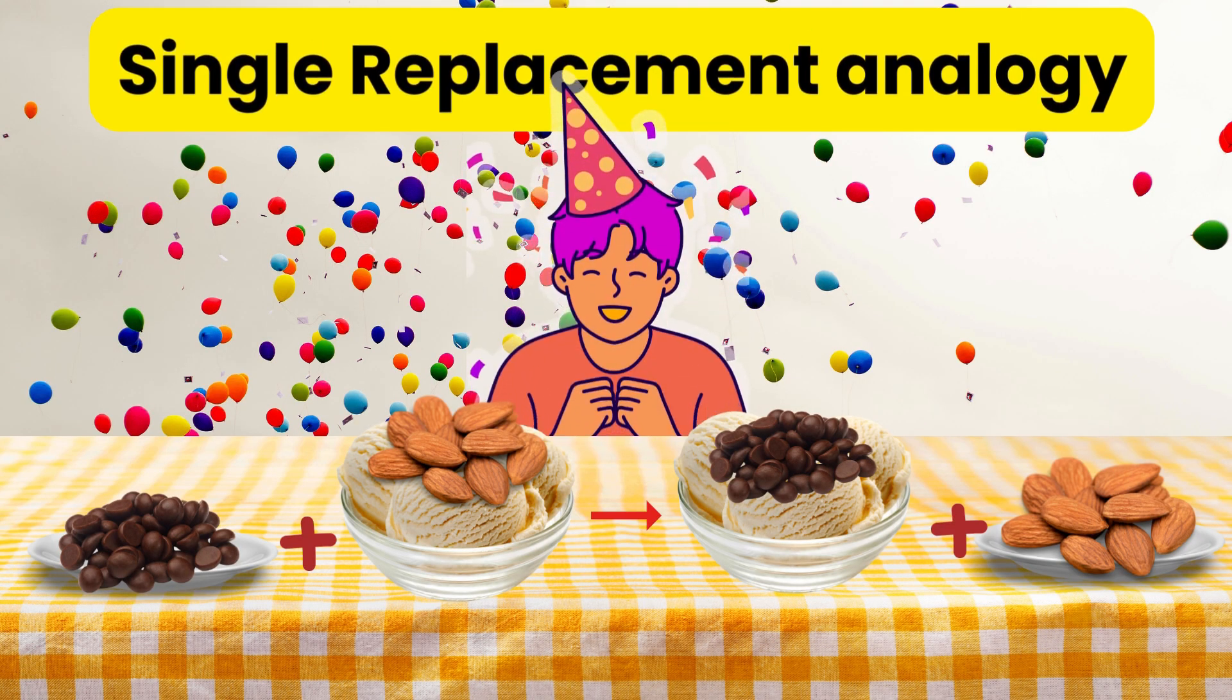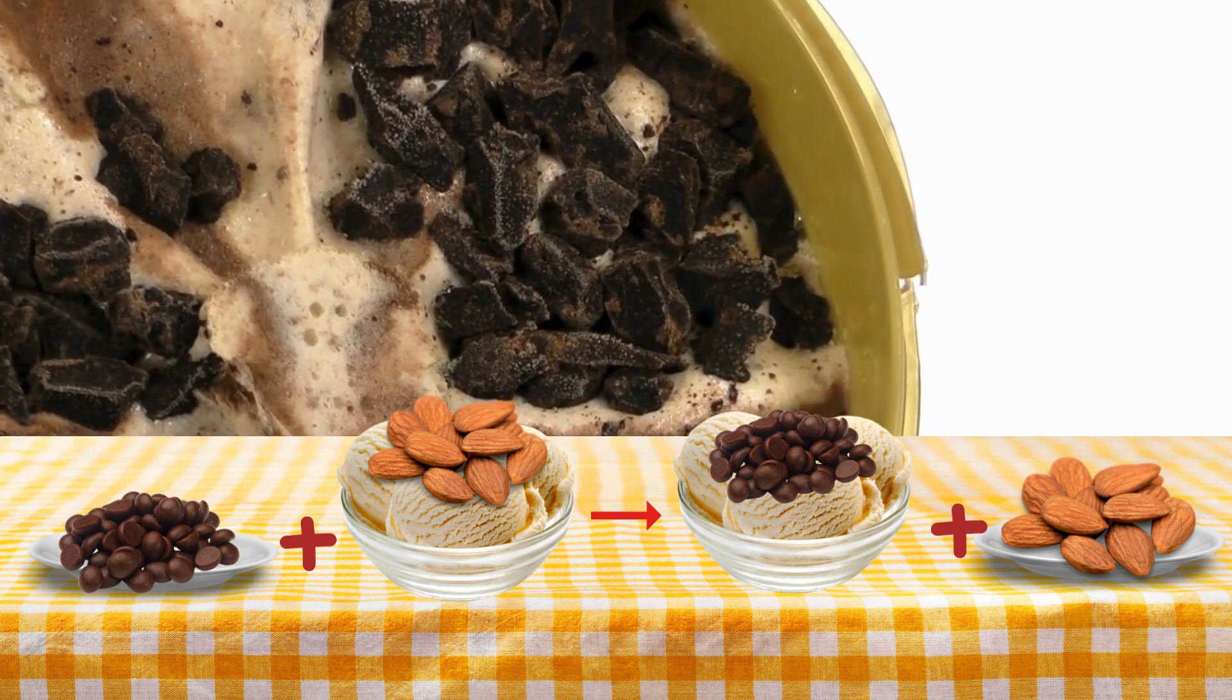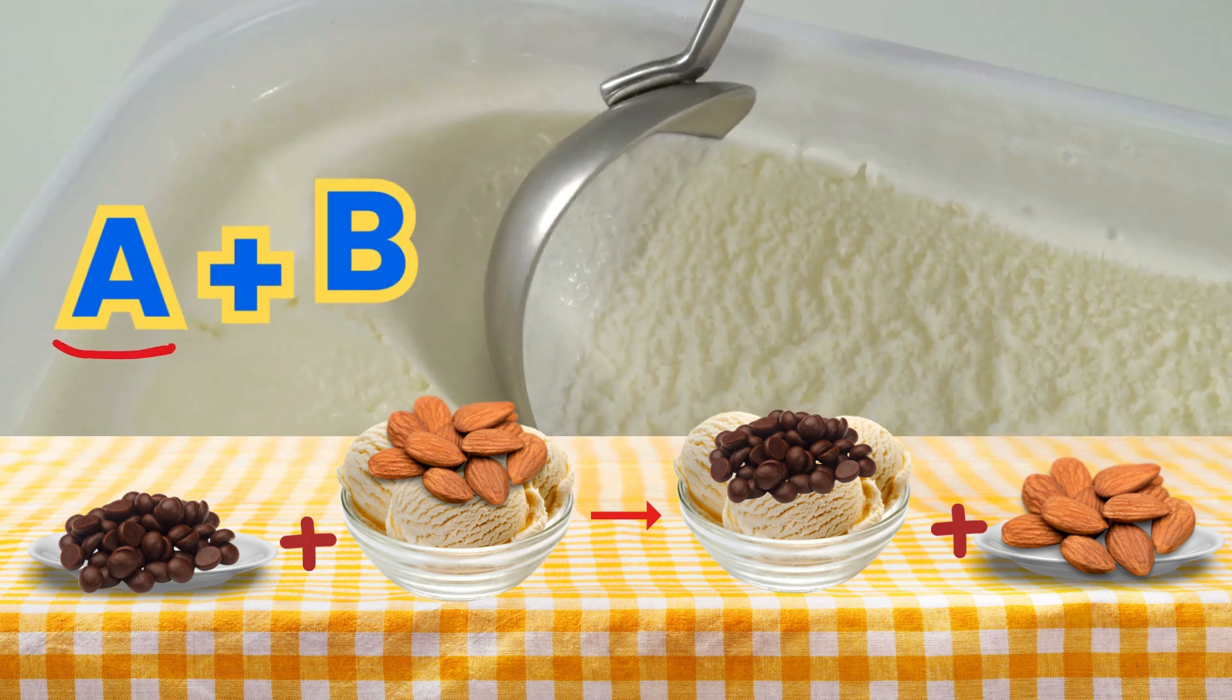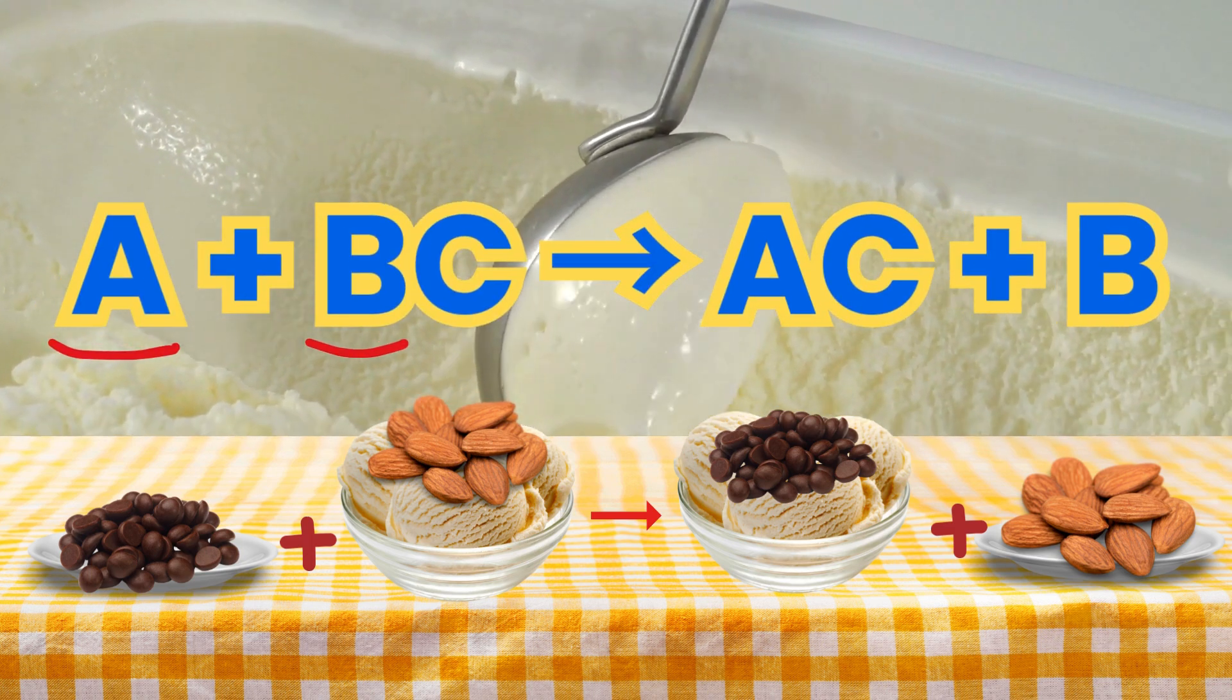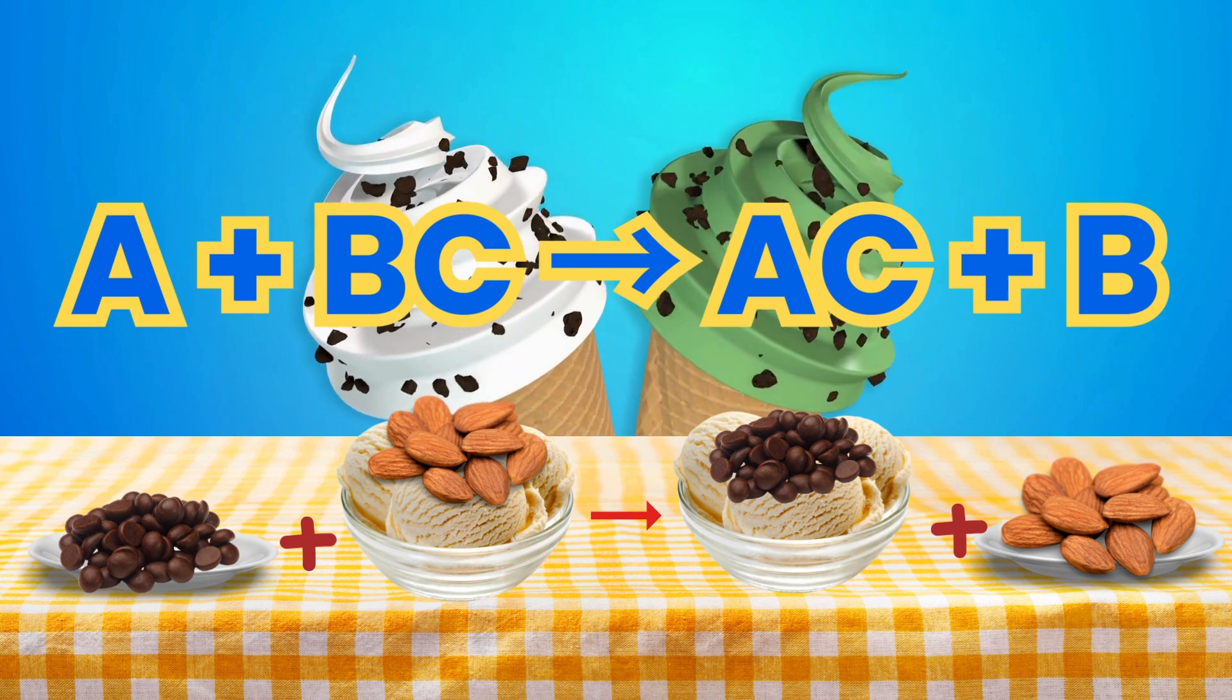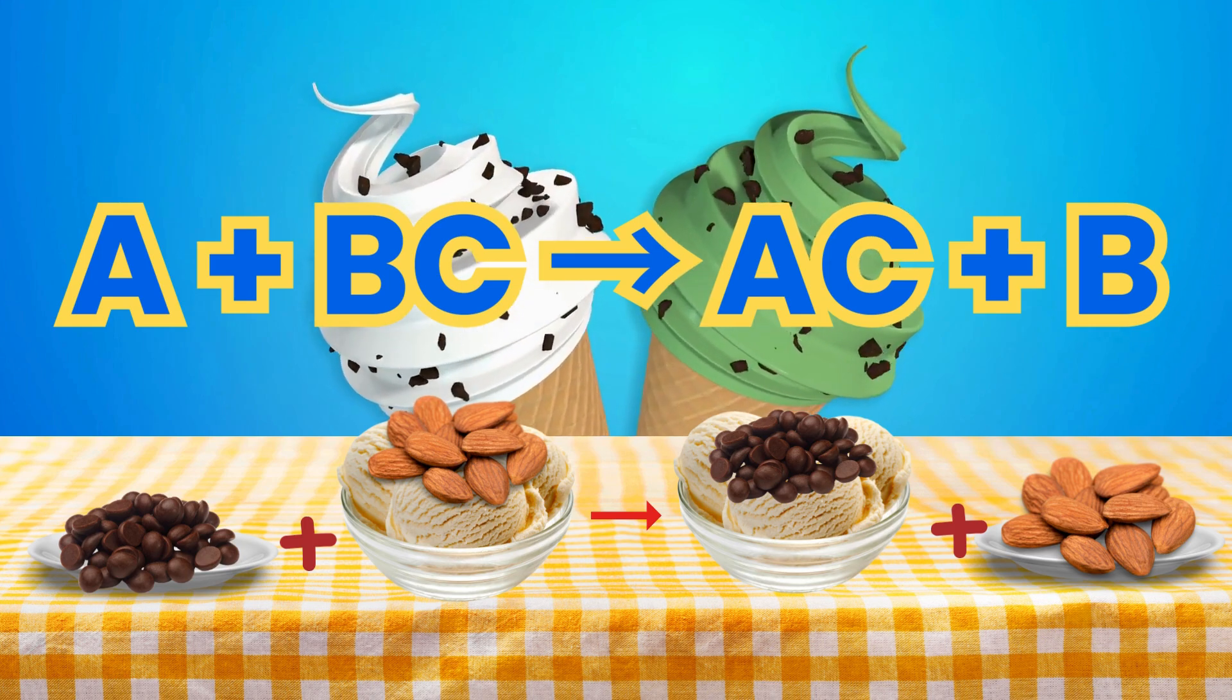Single replacement analogy. Here we have a bowl of ice cream topped with nuts and a separate plate of chocolate chips. Now we replace the nuts with the chocolate chips. Similar to a single replacement reaction where one element replaces another in a compound, in this analogy, the chocolate chips replace the nuts in the ice cream to create a new variant, ice cream with chocolate chips and the plate of nuts are left alone.